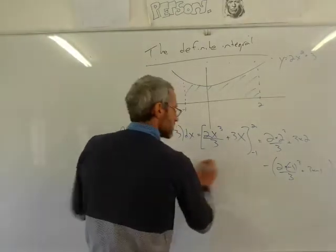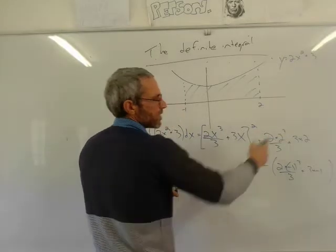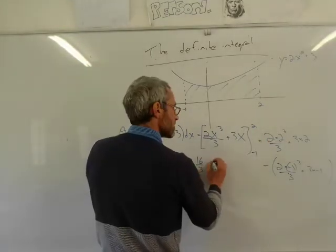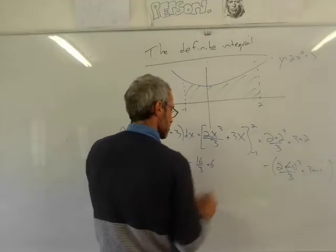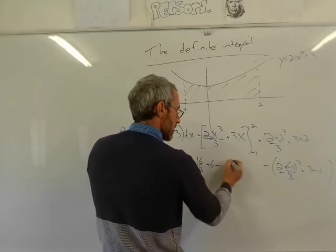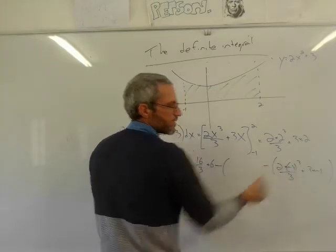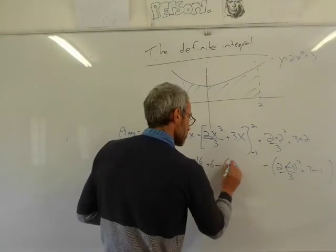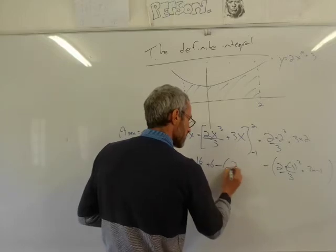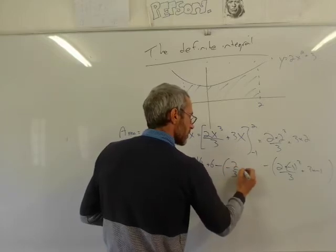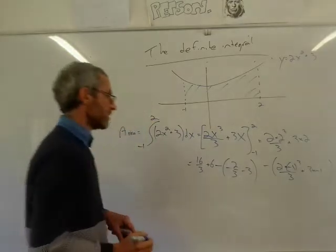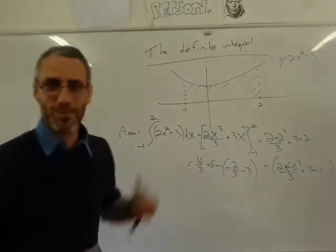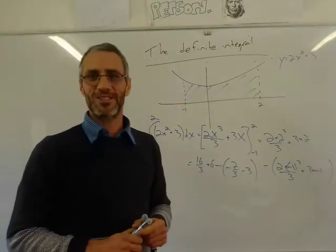Working it out: 2 times 16 over 3, which is 16/3, plus 6. Then minus: minus 1 cubed is minus 1, so it's minus 2/3, minus 3. I think you can manage from here — you can use a calculator. Just add all these numbers and you've got the area under the graph.